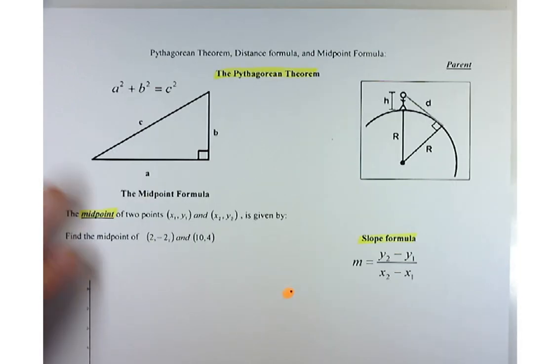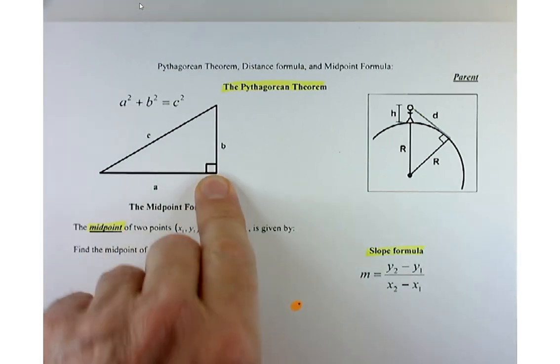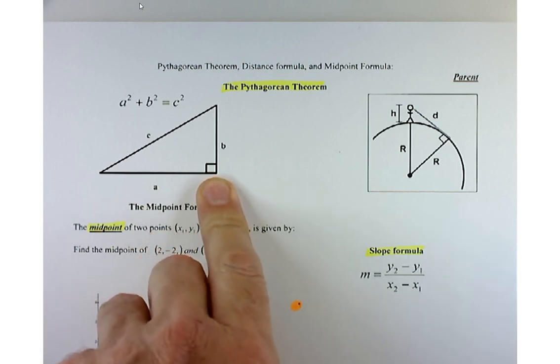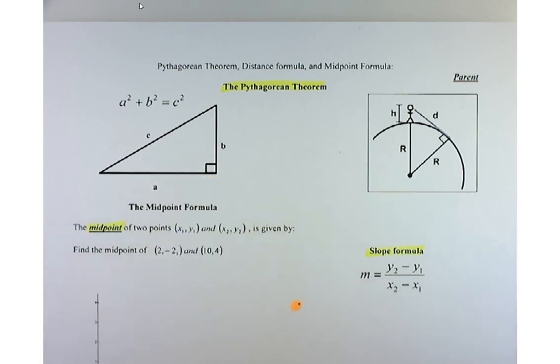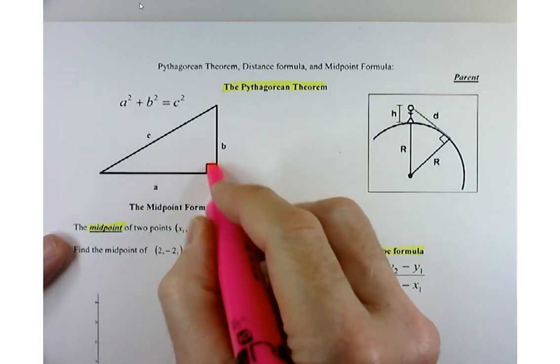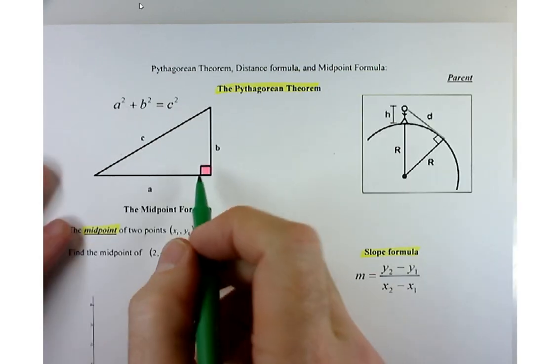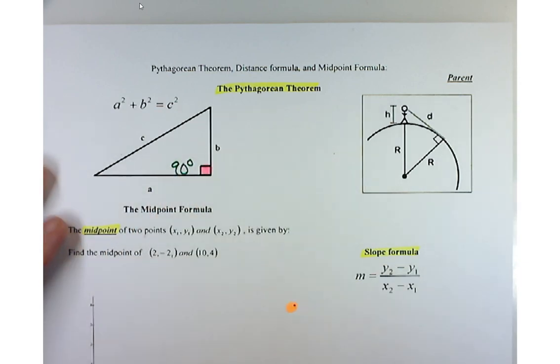Let's go back to the Pythagorean theorem. One thing you'll remember years from now is a squared plus b squared equals c squared. There's this little corner at the base of this triangle. What does that corner mean? It's a right angle, a 90 degree angle. The Pythagorean theorem only applies to triangles with a right angle.